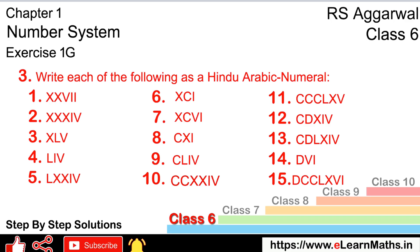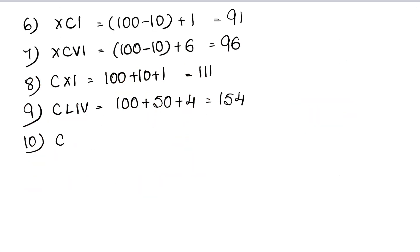Tenth is CCXXIV. C is 100 plus 100, XX is 10 plus 10, and IV is 4, so that is 224.